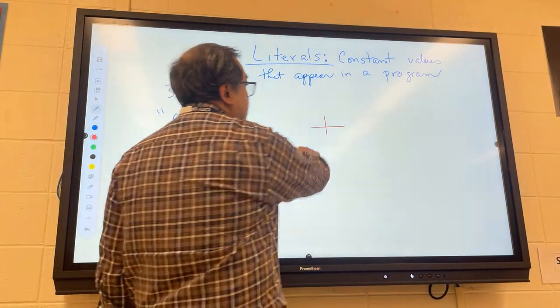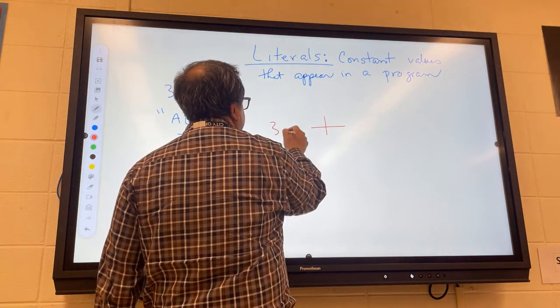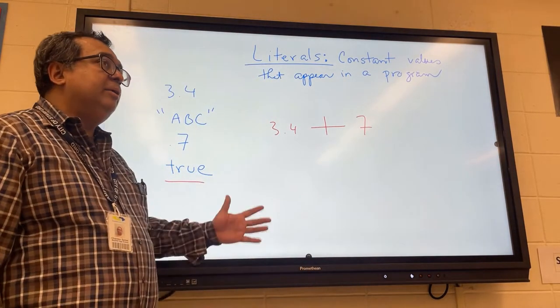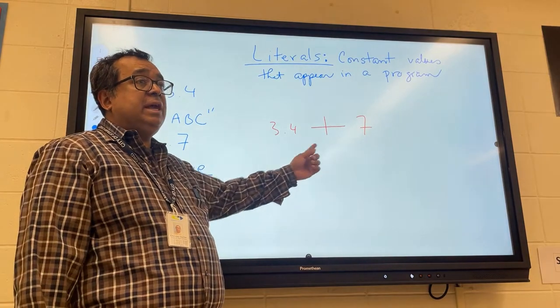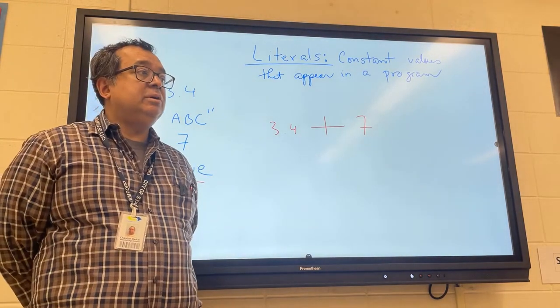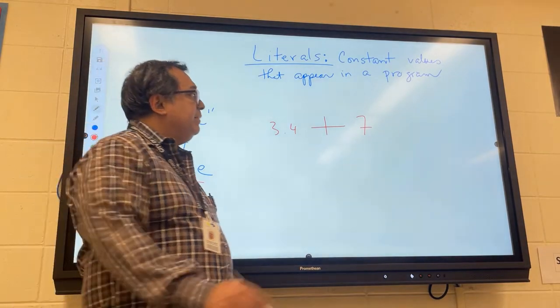So this operator in Java is sometimes used for addition and sometimes used for concatenation. If I have numbers on both sides like this, the compiler knows that it has to add the numbers together. In this case, the result is of what data type? Yes, sir? Double. Double.